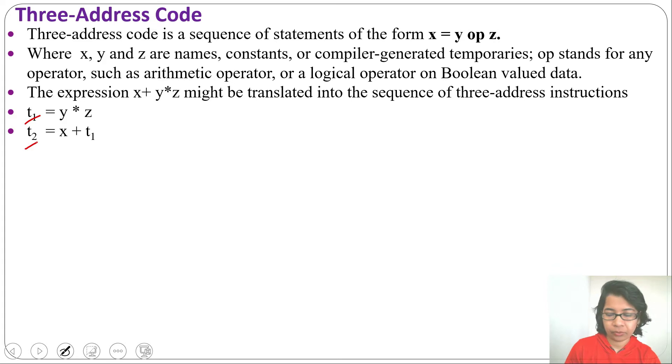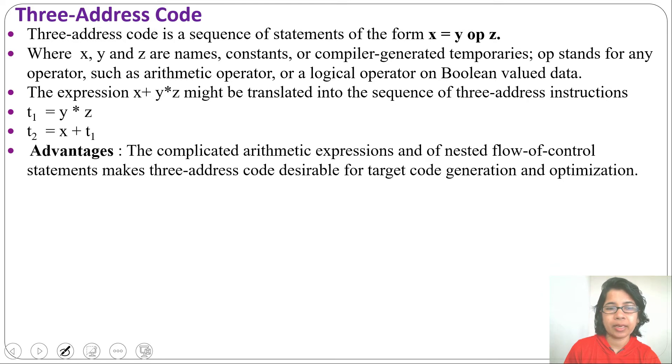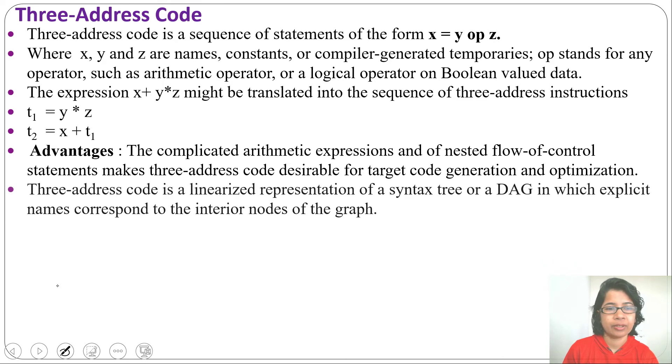Here t1 and t2 are compiler-generated temporaries. Now what is the advantage of three-address code? By three-address code we can represent complicated arithmetic expressions and nested flow statements, and it is also easy to optimize for target code optimization. That's why we use three-address code, as maximum programming statements can be represented in three-address instruction.